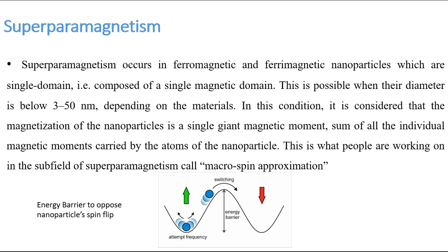When we reduce the size of a nanoparticle there comes a limit when the nanoparticle behaves like a paramagnetic atom, even though we are still in the ferromagnetic region with exchange interaction between the spins within the core. However, this huge core spin cannot be blocked in a certain direction, and the superparamagnetic effect occurs. Superparamagnetism is due to the fact that the spin is huge compared to a paramagnetic atomic spin.